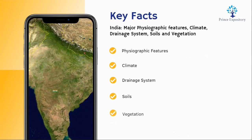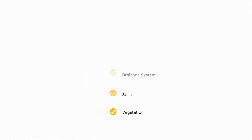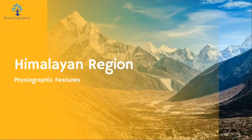Here's an overview of each. Physiographic Features include the Himalayan Region, located in the northern part of India. It includes the world's highest mountain peaks such as Mount Everest. The Himalayas act as a natural barrier and influence the climate of the region.